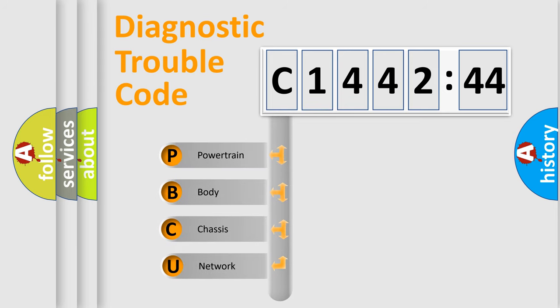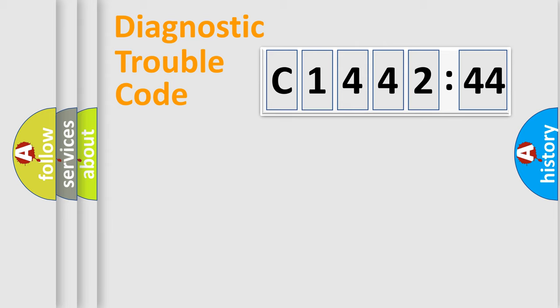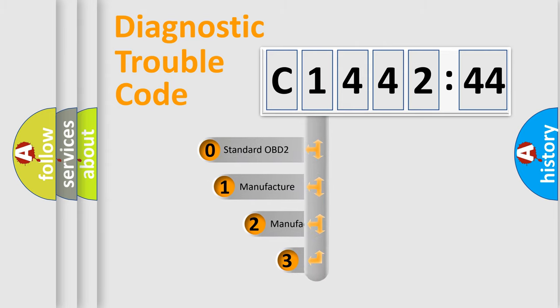First, let's look at the history of diagnostic fault code composition according to the OBD2 protocol, which is unified for all automakers since 2000. We divide the electric system of automobile into four basic units: Powertrain, Body, Chassis, and Network.